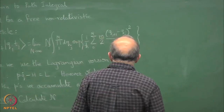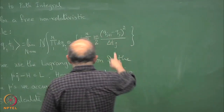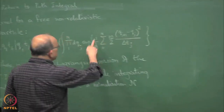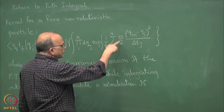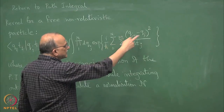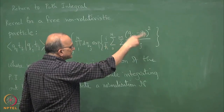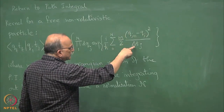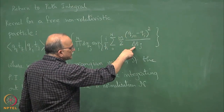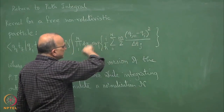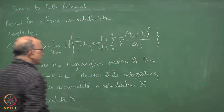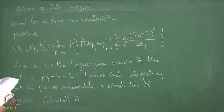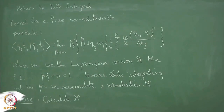Note that this is equal to i over ħ times one-half m times velocity squared, which would have a dt² but there is an integral dt, so that cancels one delta-t. So this is what we have.